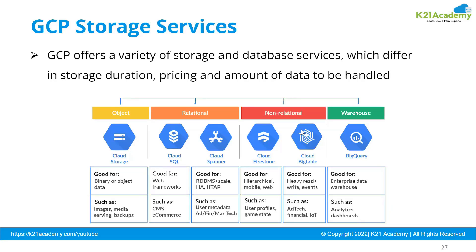GCP offers a variety of storage and database services which differ in storage duration, pricing, and amount of data handled. We can categorize them into object storage — images, videos, blobs, documents — which can be stored in a Cloud Storage bucket. We also have relational databases such as Cloud SQL and Cloud Spanner.